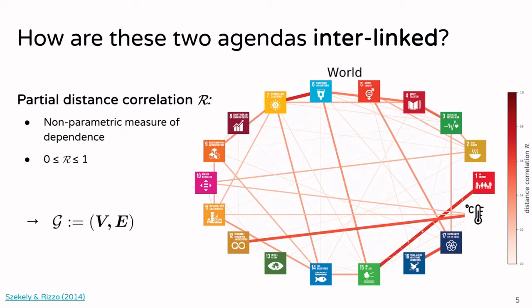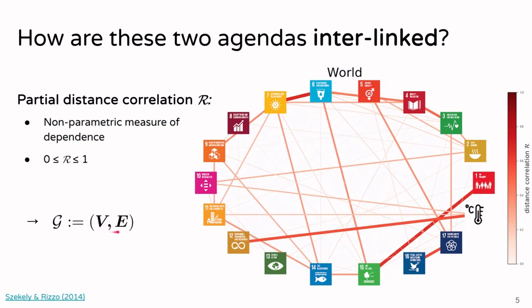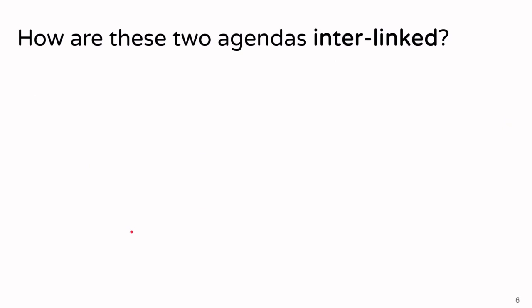At this stage of the analysis we can't take into account influences from outside the SDGs, for example a severe war or something like that. But this is the best we can do at the moment, and I think it's already very helpful to have this analysis. What we get in the end is a graph — specifically an undirected weighted graph with vertices as nodes and edges as connections between the different SDGs.